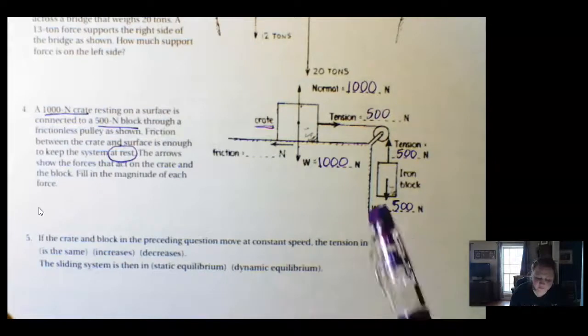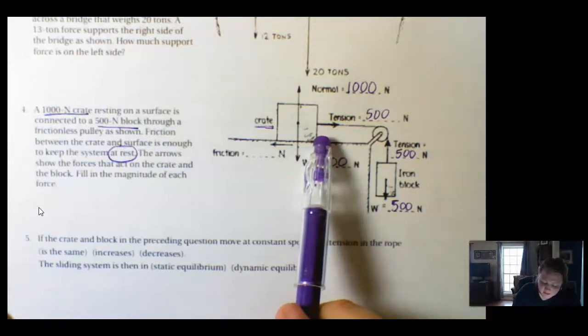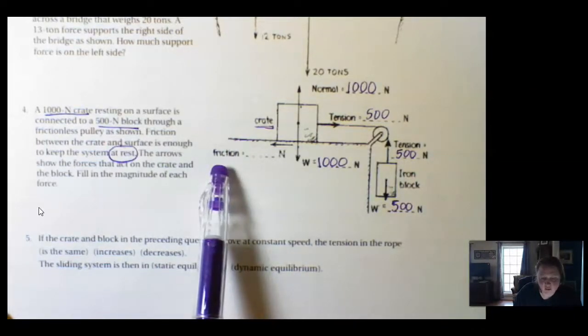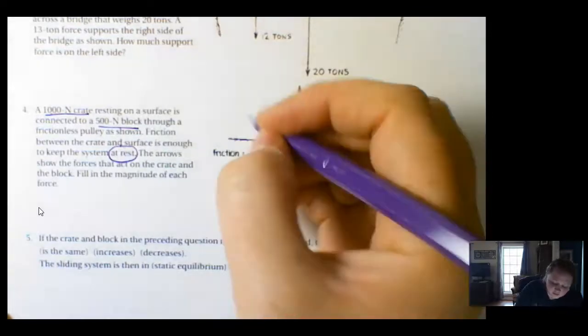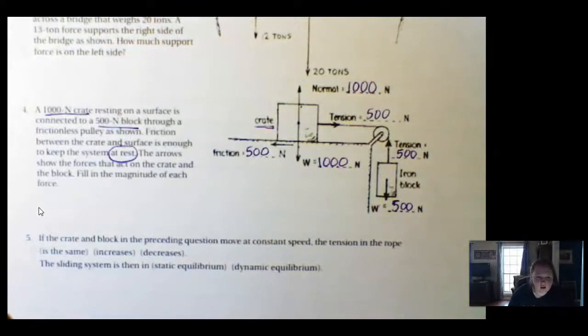Now, it's still in equilibrium, so we have tension pulling to the right here, 500 newtons. So, what should friction be in order to keep it stable? 500 newtons.